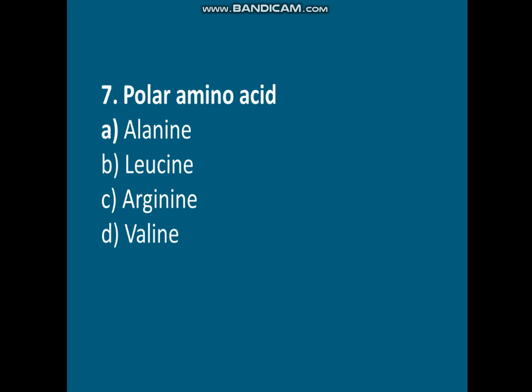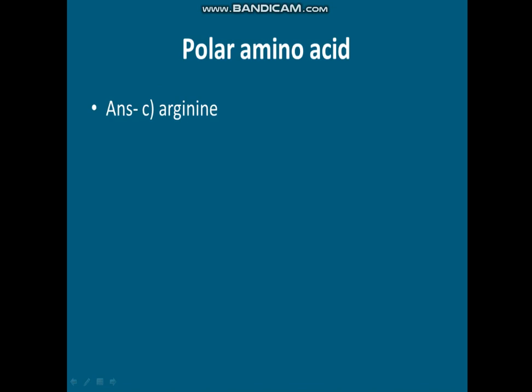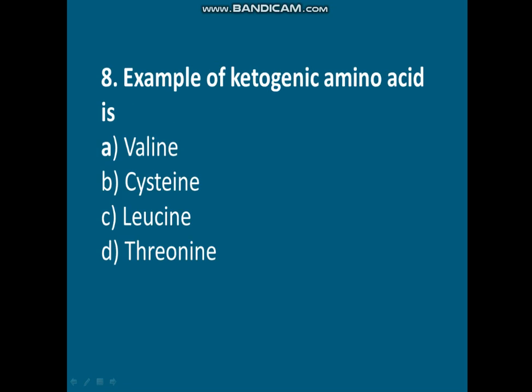Question seven: which of the following is a polar amino acid? Options are: A) Alanine, B) Leucine, C) Arginine, D) Valine. The correct answer is option C, Arginine. Arginine is the polar amino acid.